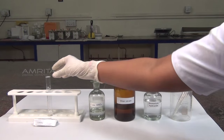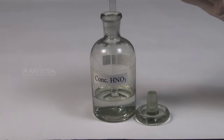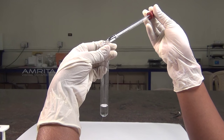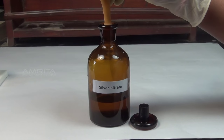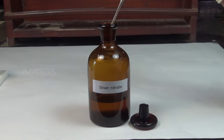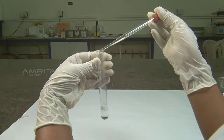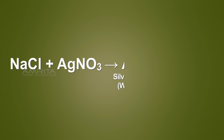Procedure: Take a small portion of Lassaigne's extract in a test tube. To this, add a small amount of concentrated nitric acid using a dropper. Boil the contents of the test tube over a Bunsen burner and cool. Using another dropper, add silver nitrate solution to the test tube.